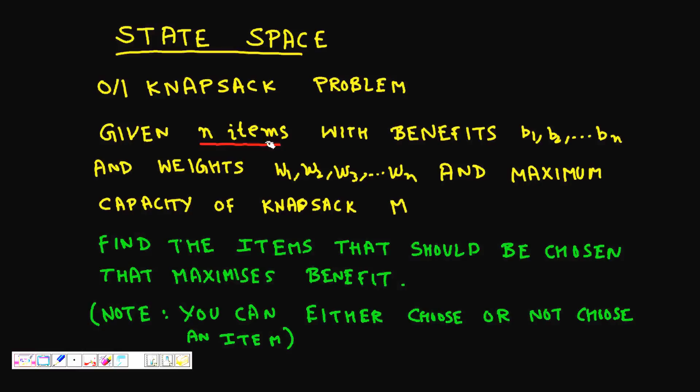Let's recap quickly what is the zero-one knapsack problem. It's a problem where you are given n items. Each item has some benefits, let's say b1, b2, b3 till bn dollars, and they have weights w1, w2, w3 till wn. We have a knapsack, a bag which can have a maximum capacity of M. You have to fill that knapsack with the items such that you obtain the maximum benefit. The constraint is your weight of the items should never be more than M. For zero-one, it means you can either take an item or not take it, you cannot cut that item into pieces like fractional knapsack problem.